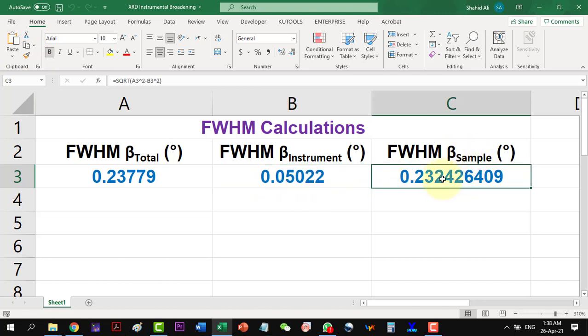As our peak was Gaussian in shape, so we will consider this expression. And here is the instrumental contribution subtracted value of the FWHM. We can utilize this value for the calculation of many parameters from the XRD data.